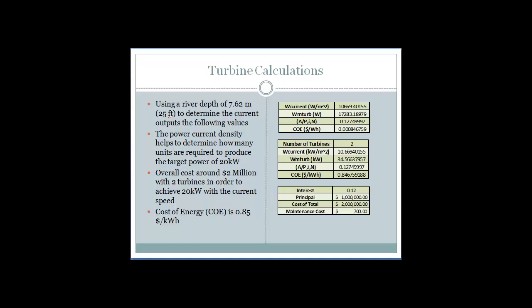Since the river has a depth of roughly 25 feet, the current was determined and it would cost around $2 million to implement two turbines in order to achieve the 20 kilowatts that's needed. And this cost of energy is roughly 85 cents per kilowatt hour.